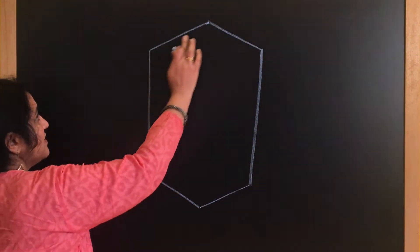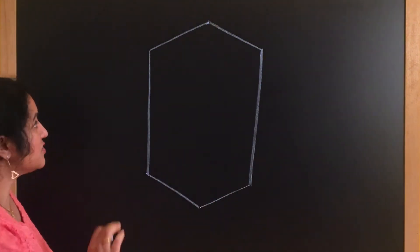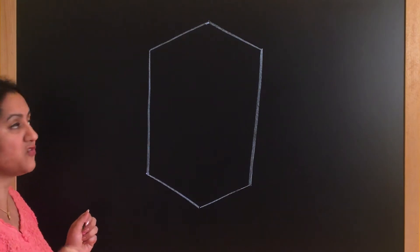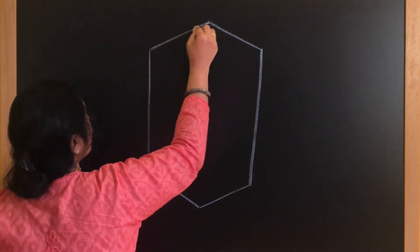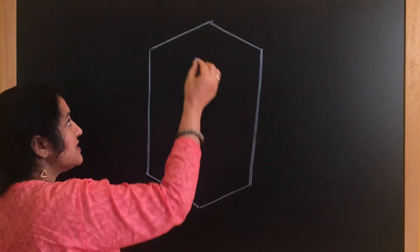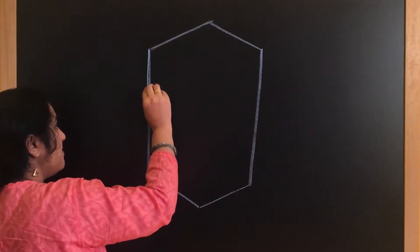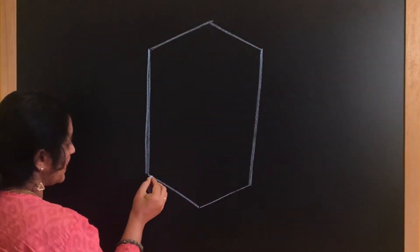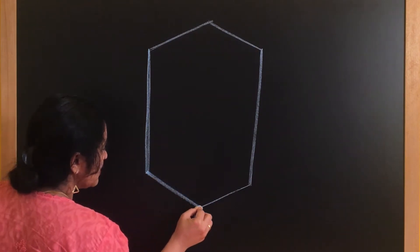So let us assume that this is the cell wall. Since the cell wall is a tough and rigid structure, let us darken it in the beginning itself. You can just keep your pencil in a slanting position and make it a little thicker, which represents the cell wall.